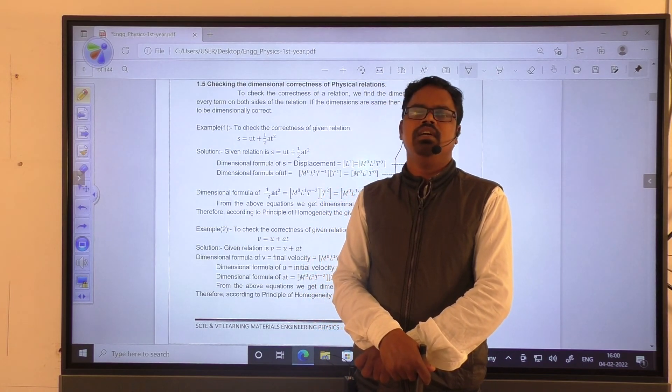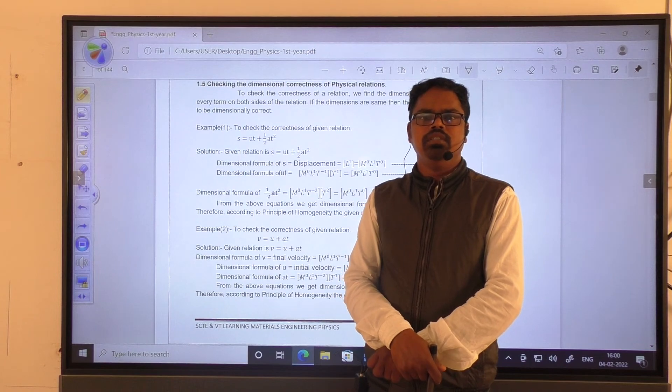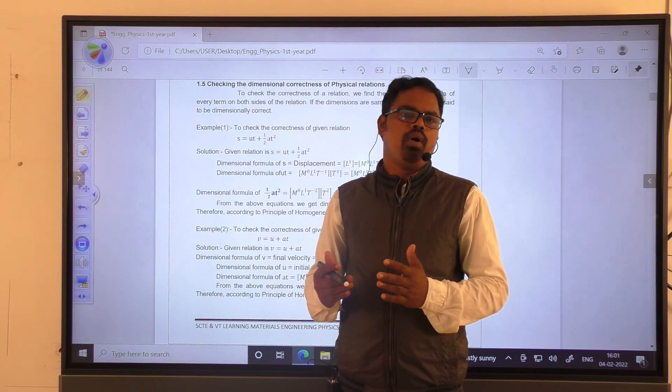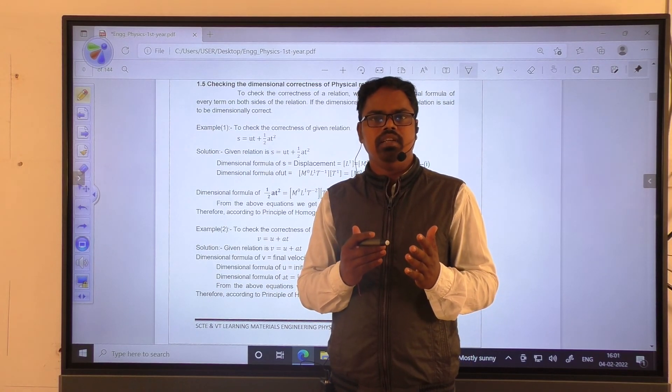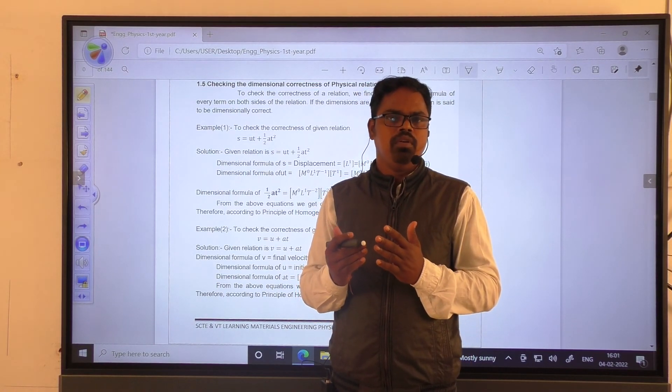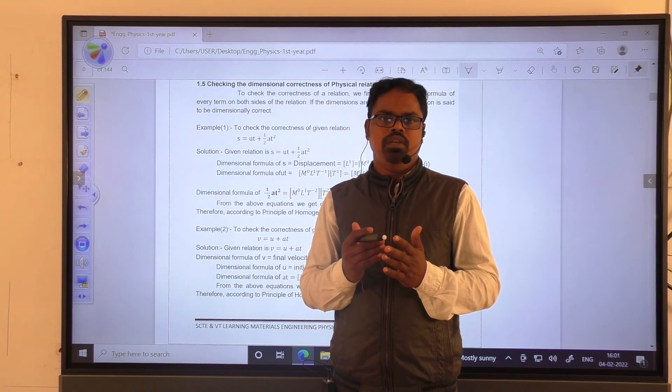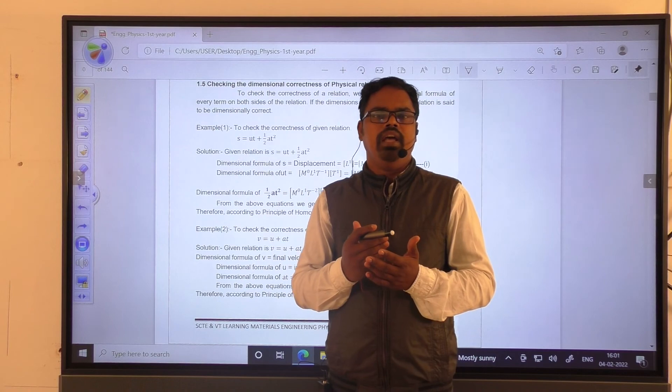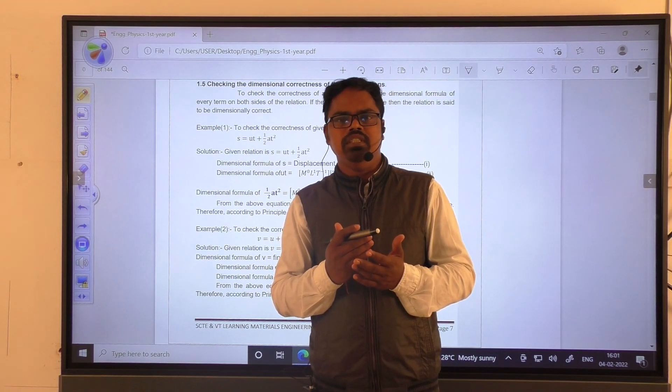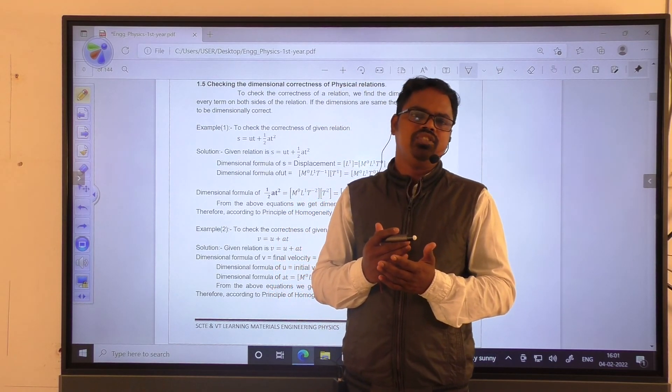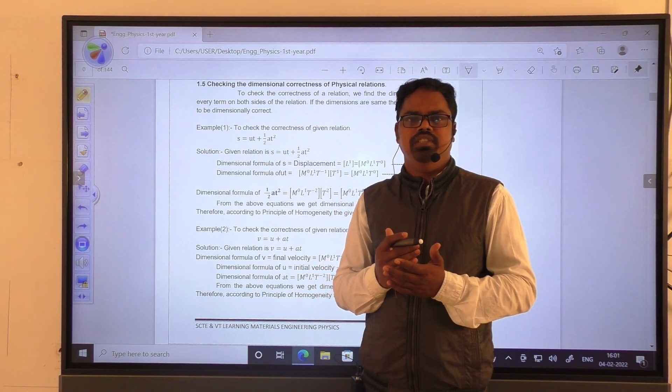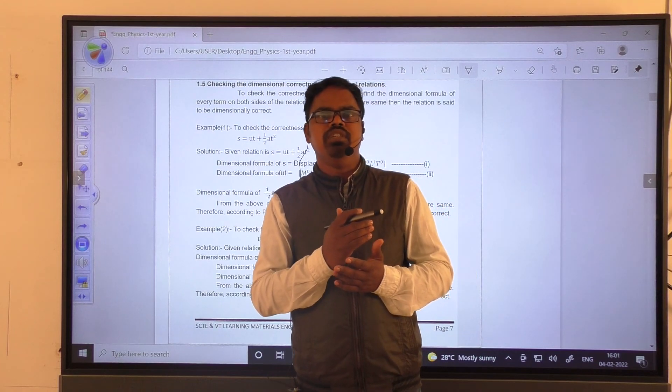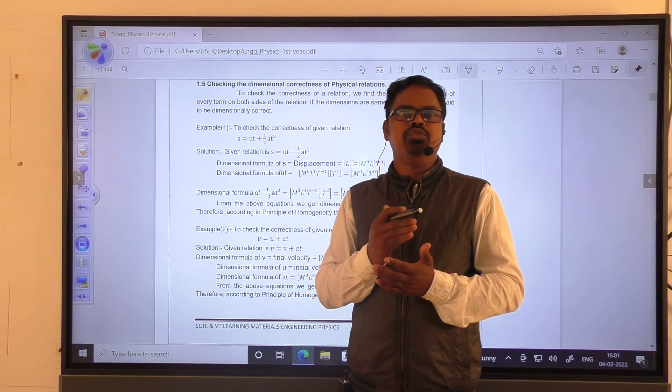Dimensional analysis method has the following three uses: to convert the value of a given relation from one system to another system like from MKS system to CGS system or CGS to MKS system, second one is to check the correctness of a given relation, and number three, to derive a relation among various physical quantities.